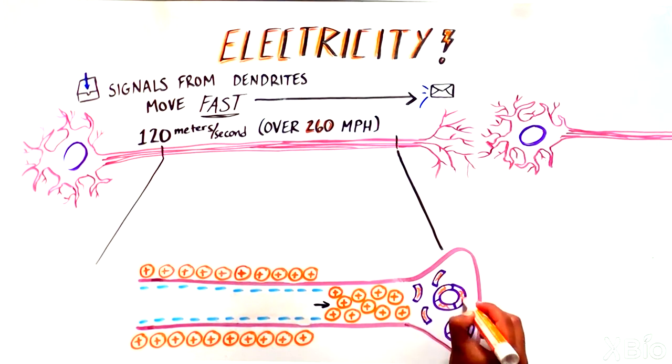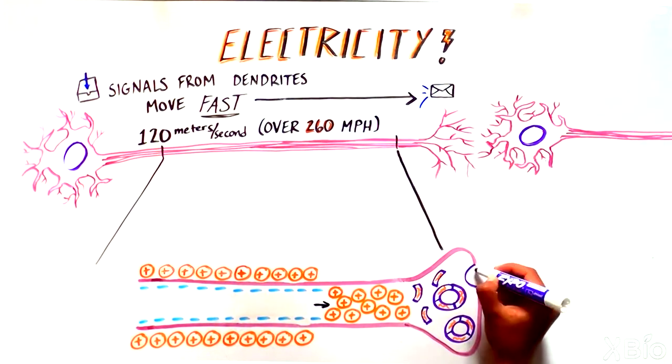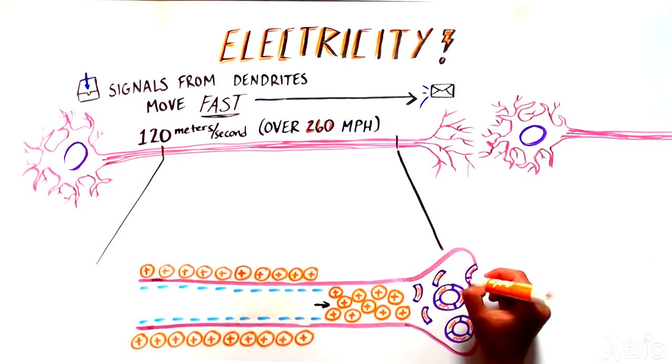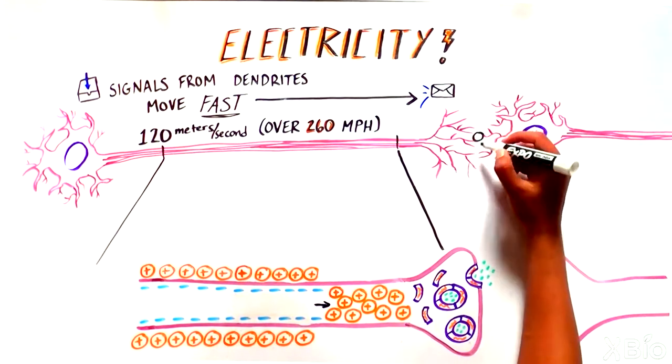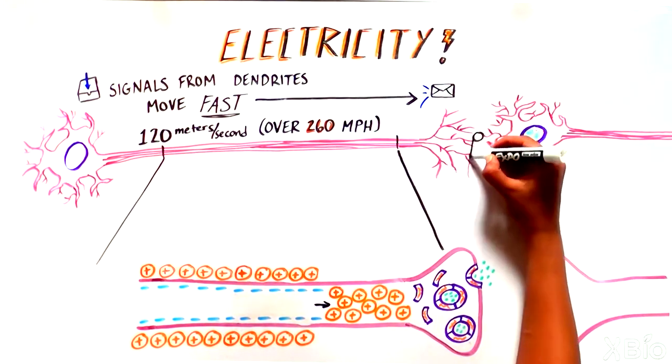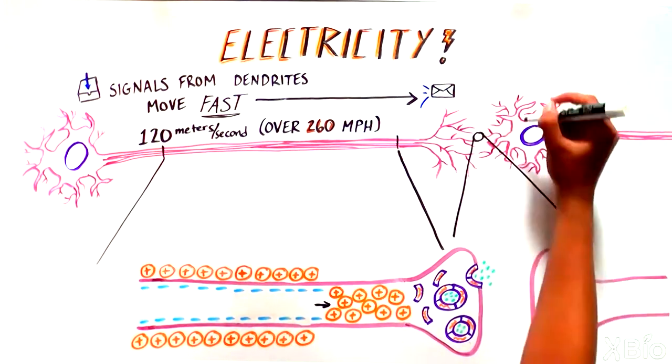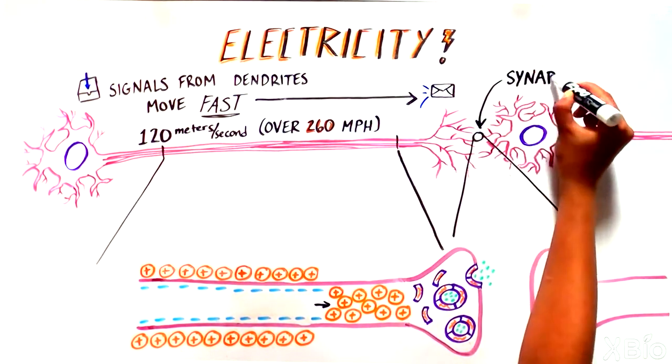These proteins then facilitate the release of neurotransmitters, small molecules that neurons use to communicate with each other, into the tiny space where two cells meet, also known as a synapse.